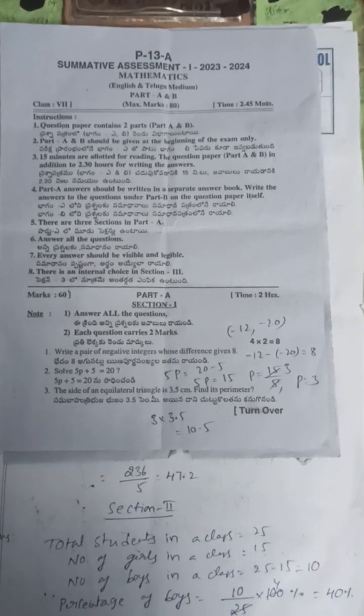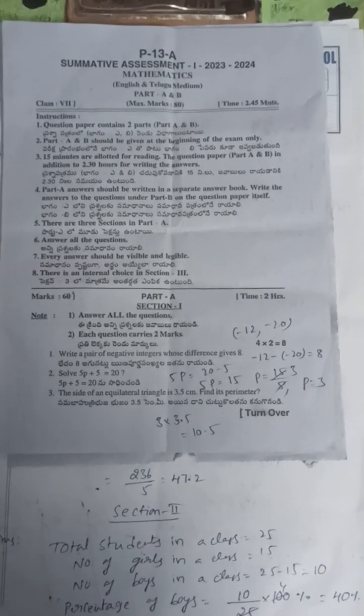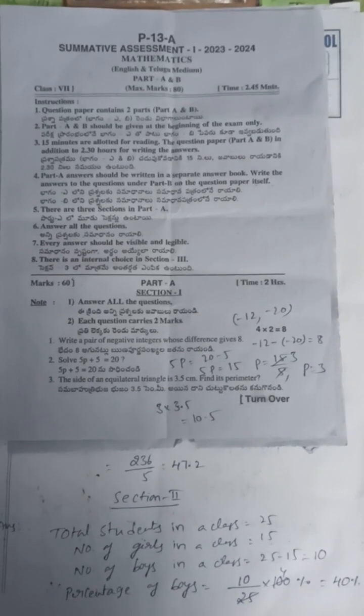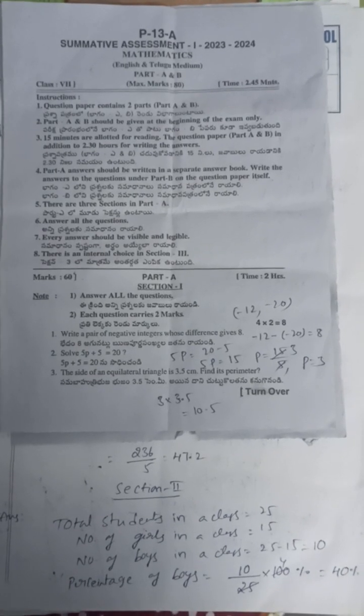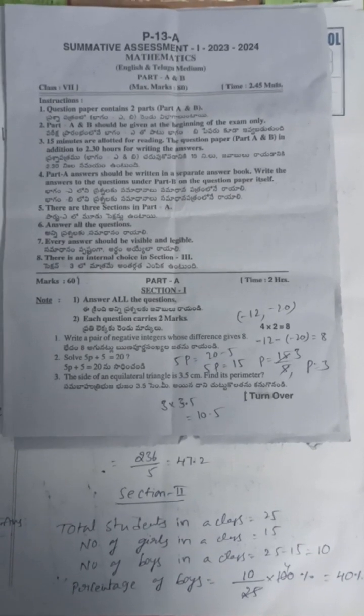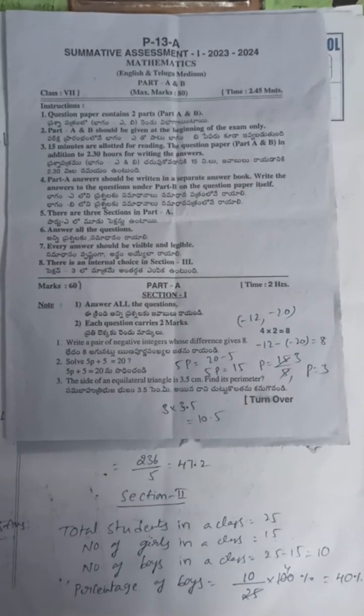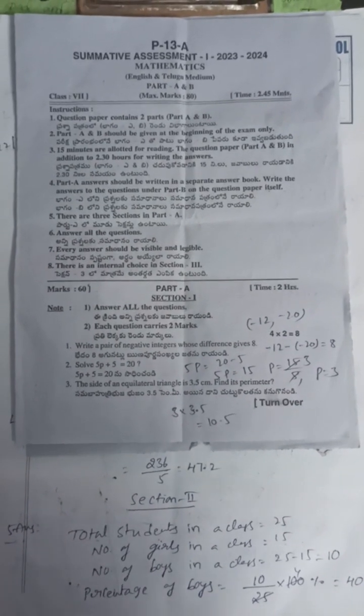Solve 5p plus 5 equals 20. So then p value is 3. Next, the side of an equilateral triangle is 3.5. Find its perimeter. Equilateral triangle means all sides are equal, so side is 3.5. Then perimeter is 3 times side, that is 3 times 3.5, which equals 10.5.